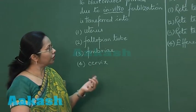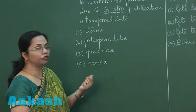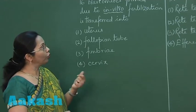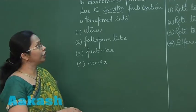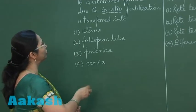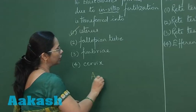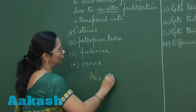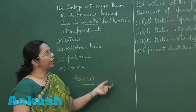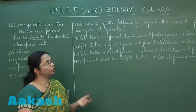Up till the 2 to 8 blastomere stage it will be transferred into the fallopian tube, and more than 8 blastomeres it will be transferred into the uterus. Since here it is the 16 blastomere stage, our answer is uterus, that is option number one.